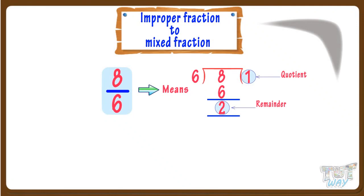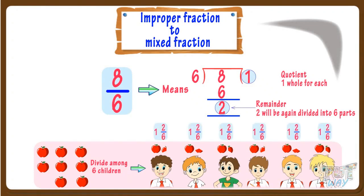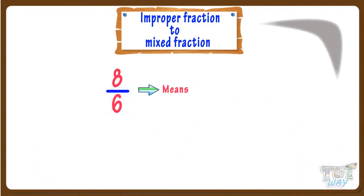Which means 1 whole number and 2 will again have to be divided by 6. That is, if we have to divide 8 things among 6 persons, each person will get 1 whole thing and a part which will be 2 by 6 portion of a whole thing. So we can write it as 1 and 2 by 6. So 8 by 6 is the same as 1 and 2 by 6.